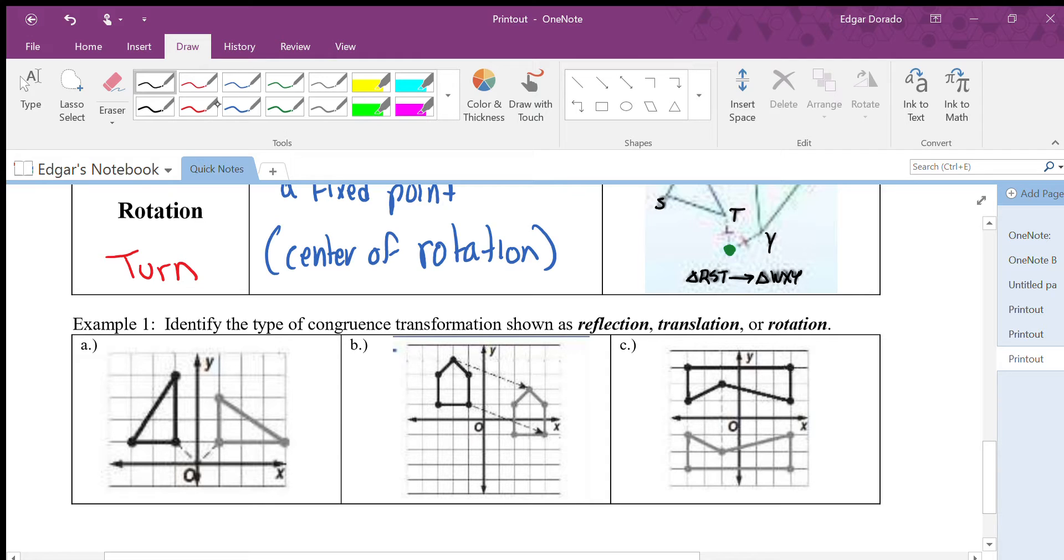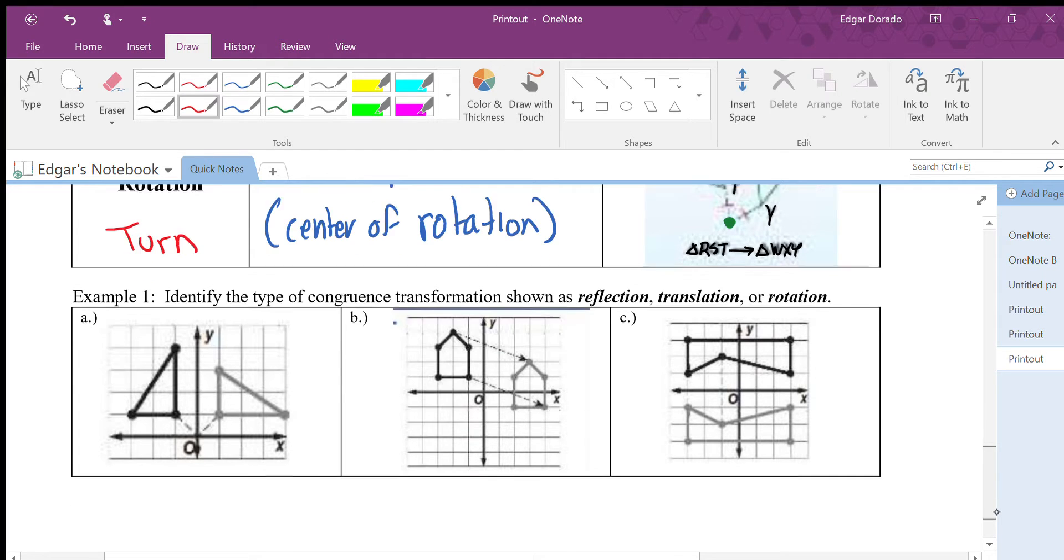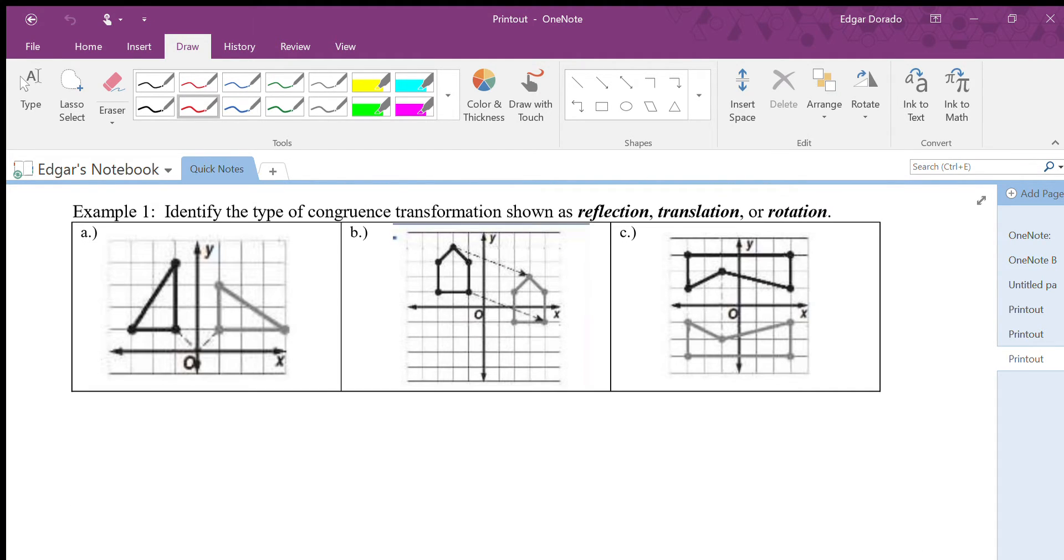All right guys, let's go ahead and see if we can figure these out. Well first off, I think letter B is the easiest to figure out because notice that it kind of looks like a little house. It just kind of slides over, it moves over to the side, not only down but also to the right. So this is a slide, which we said is called a translation.